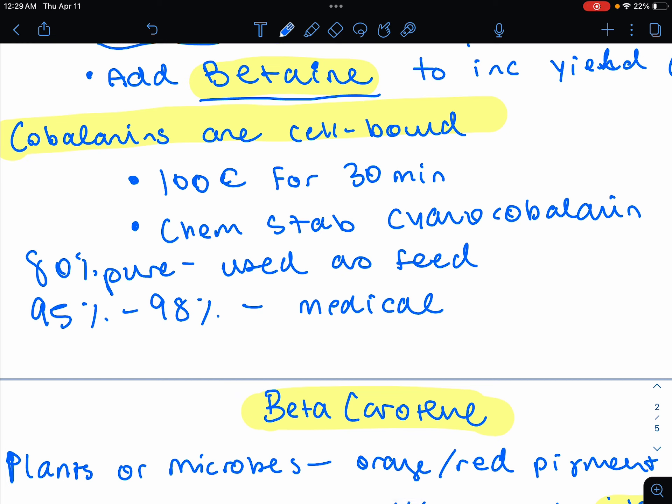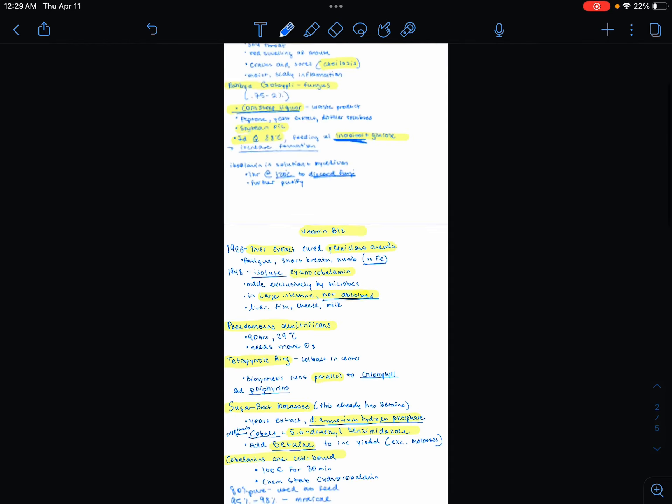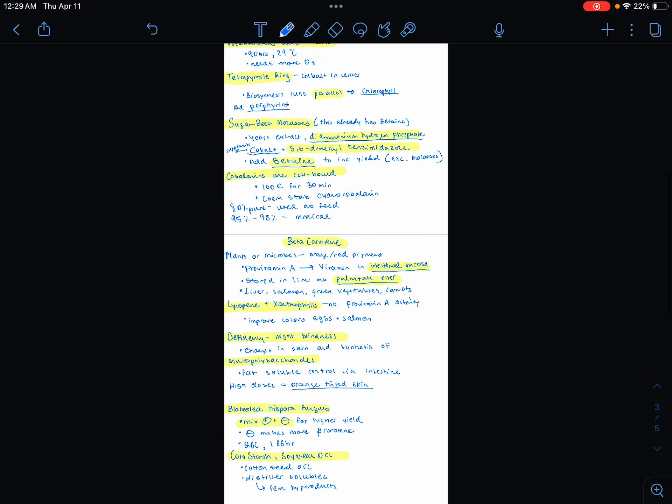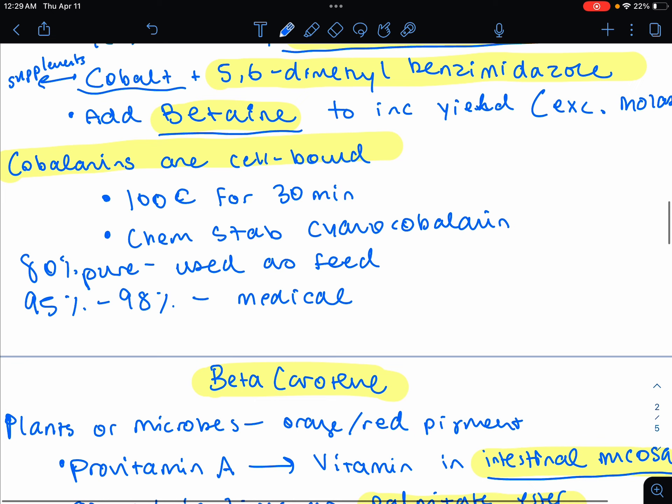B12, the cobalamins are going to be completely bound to the cell, unlike in B2 where some of them are free-floating. If we go back, in riboflavin, some of them are free-flowing. Cobalamins and vitamin B12 will be bound to the cell. So you need to heat treat them at 100 degrees Celsius for 30 minutes.